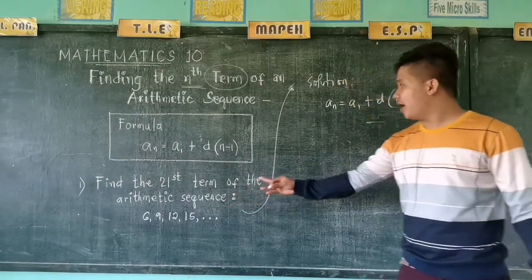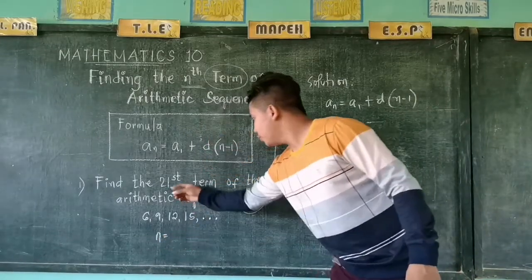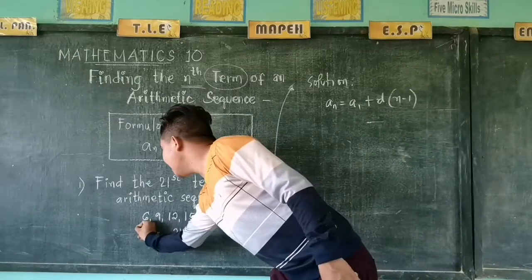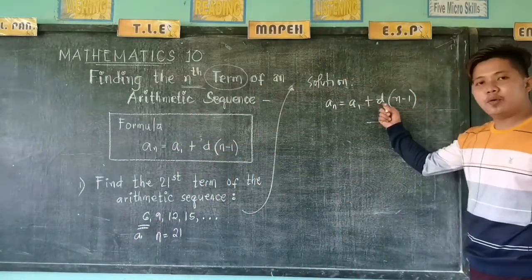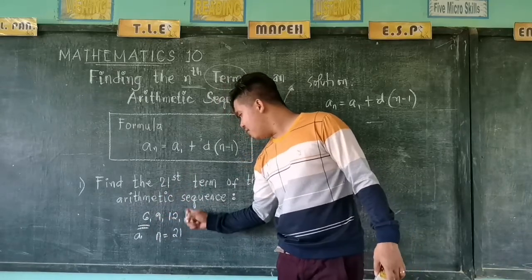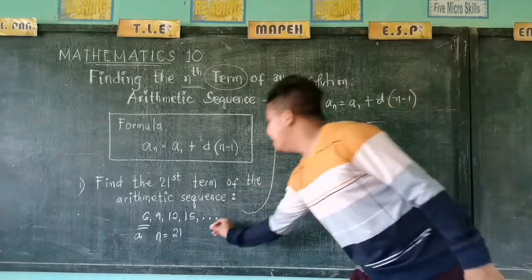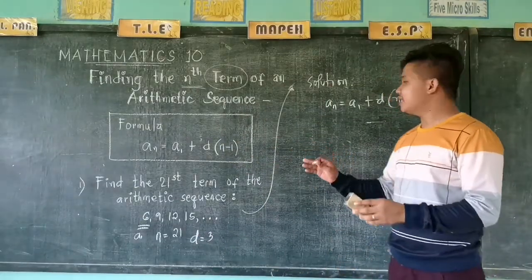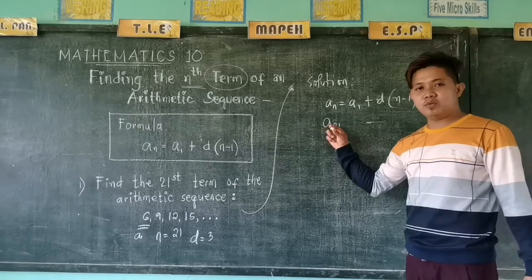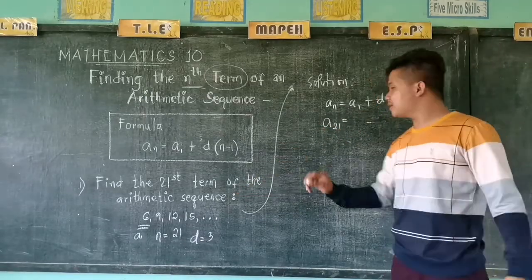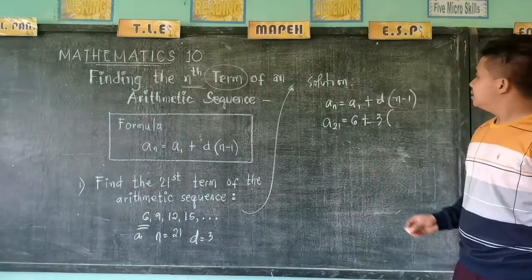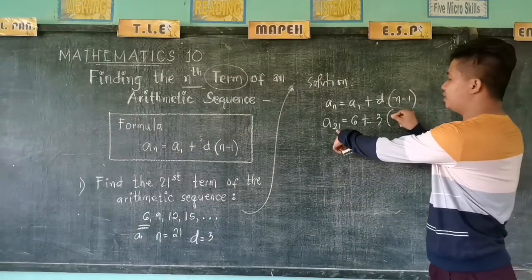In this case, what is our n? Our n is 21. Our a_1, our first term, is 6. And then the difference, what is the common difference? 9 minus 6, that is 3. 12 minus 9, still 3. And 15 minus 12, that is 3. So our d here is 3. Now let's apply the formula. Let's substitute the given values. So our n is 21, a_21 equals a_1 is 6 plus our d, which is 3, times n, which is 21 minus 1.